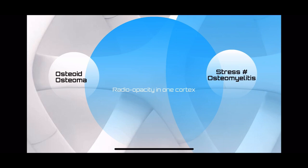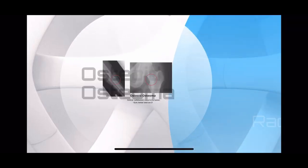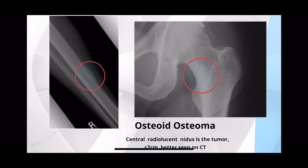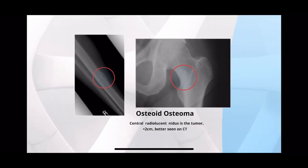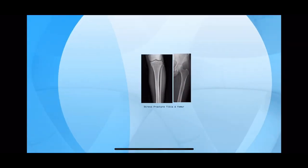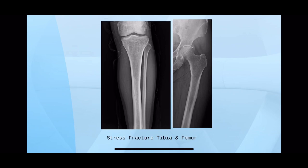If you see a sclerotic eccentric lesion, think of osteoid osteoma — this is what you are asked very commonly in exams. The sclerosis is limited to one of the cortices, and in osteoid osteoma you can sometimes see a radiolucent nidus, which is the tumor part. The sclerosis is just a reaction to it, and this small nidus is less than two centimeters. Sometimes you can get a stress fracture or osteomyelitis that looks similar.